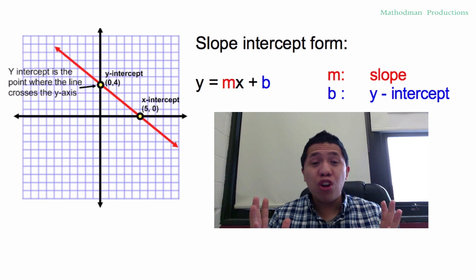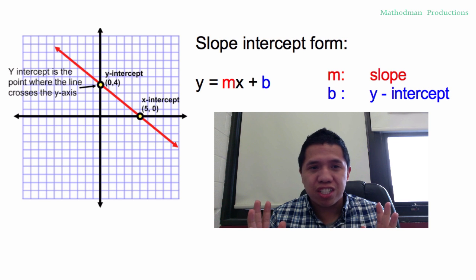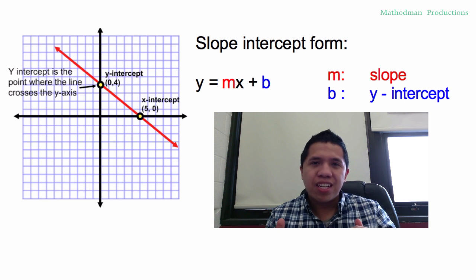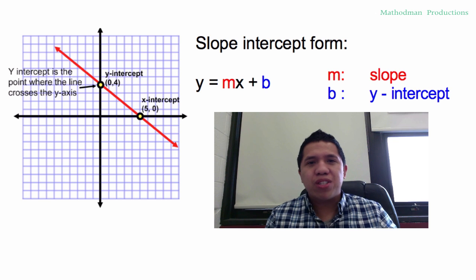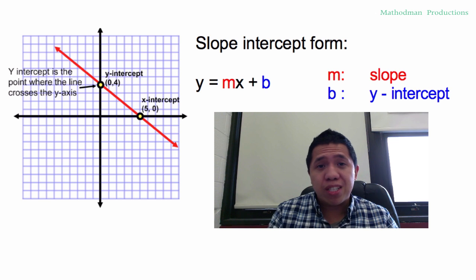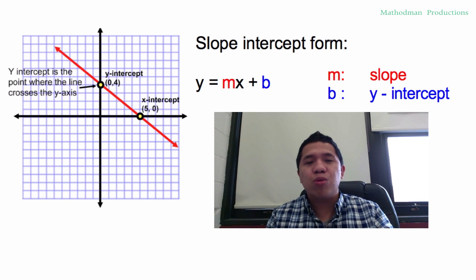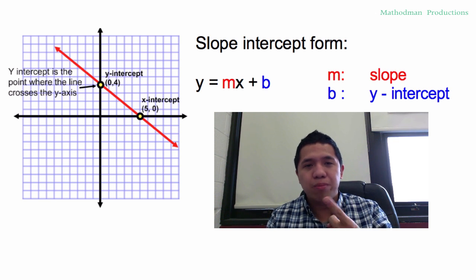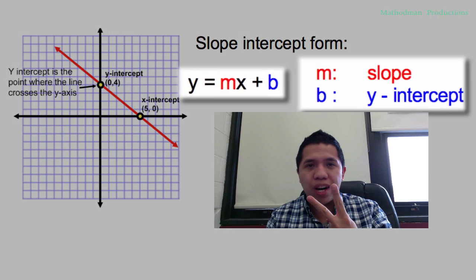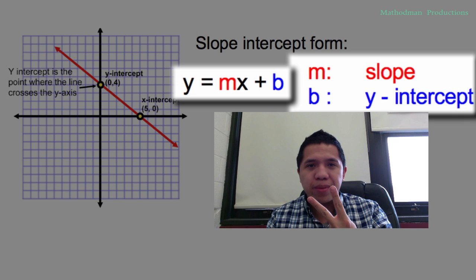Welcome to another Method Man Productions lesson. Today we're going to learn about slope-intercept form, and you need two things for that: you need a slope and a y-intercept.